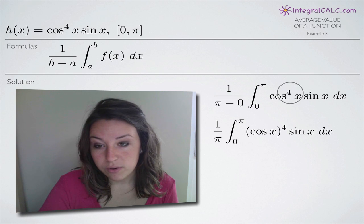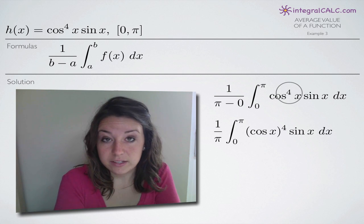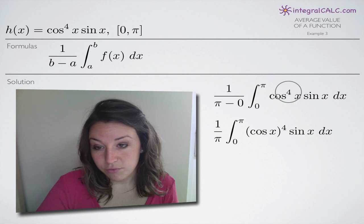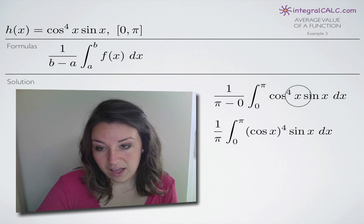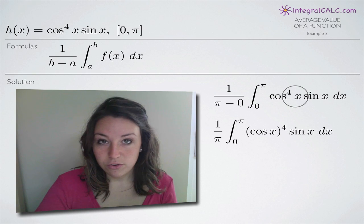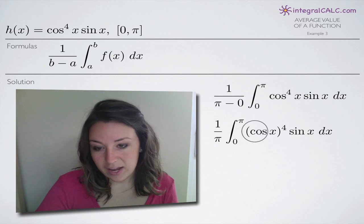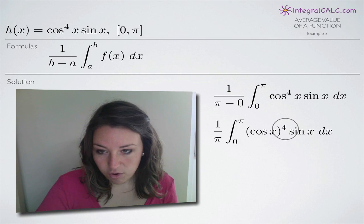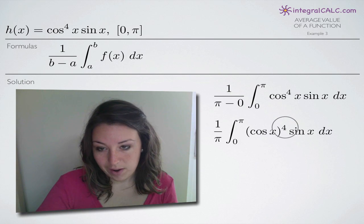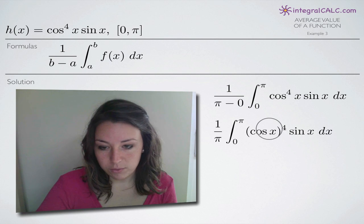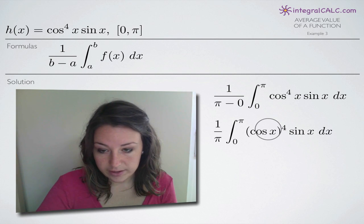Even though it's not really technically correct, the best way to work with cos to the fourth of x is as it's written in the integral. When I move it outside, I can just see cos of x raised to the fourth power, which is still technically correct, but the best way to write it is with the fourth after the cosine.